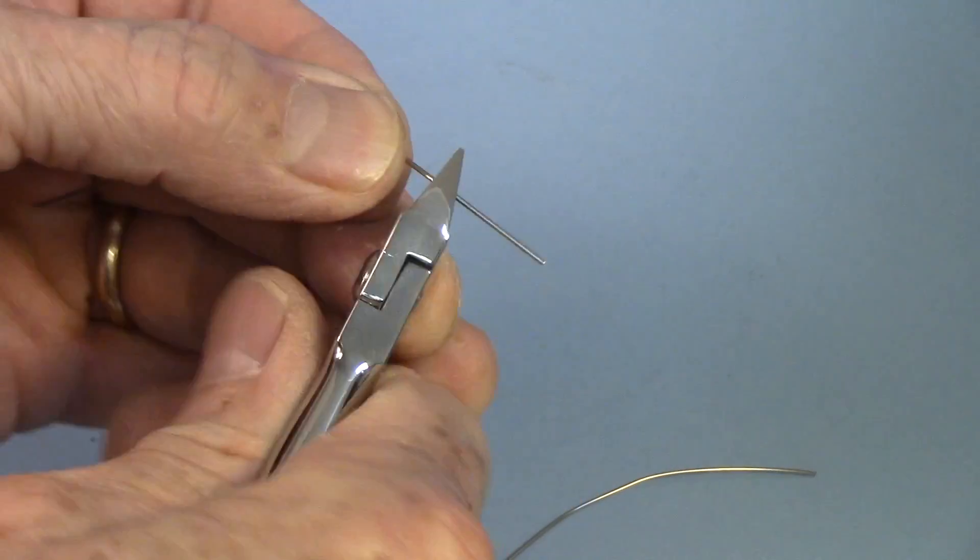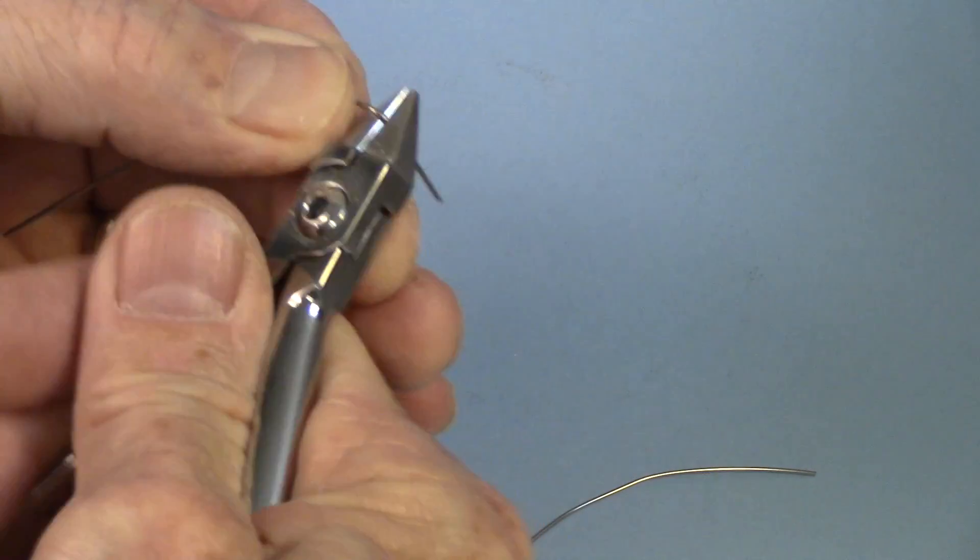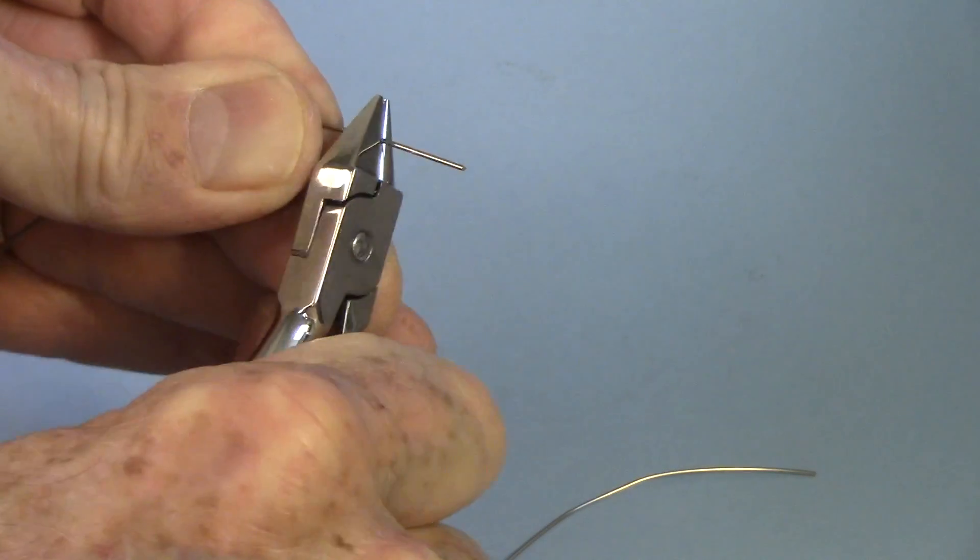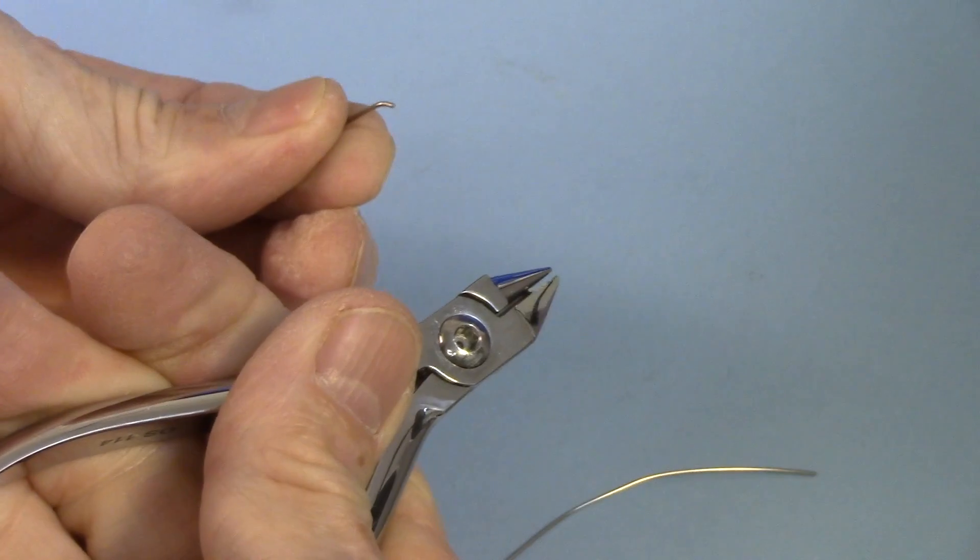So this is the nickel-chromium wire. 2, 3, 4, 5, 6, 7, 8, 9, 10. Okay, so at 10 bends, it breaks.